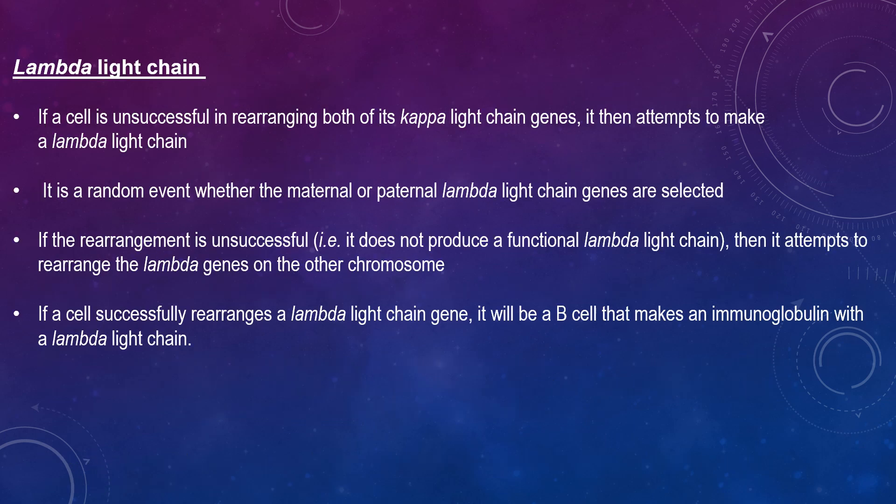If a cell is unsuccessful in rearranging both its kappa light chain genes, it then attempts to rearrange a lambda light chain gene. This is a random event as to whether the maternal or paternal lambda light chain genes are selected. If the rearrangement is unsuccessful and does not produce a functional lambda light chain, it attempts to rearrange the lambda gene on the other chromosome. If a cell successfully rearranges a lambda light chain gene, it will become a B-cell that makes an immunoglobulin with a lambda light chain.